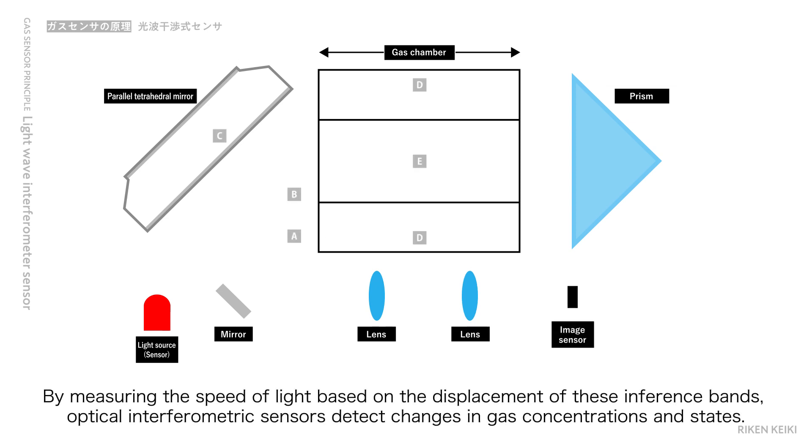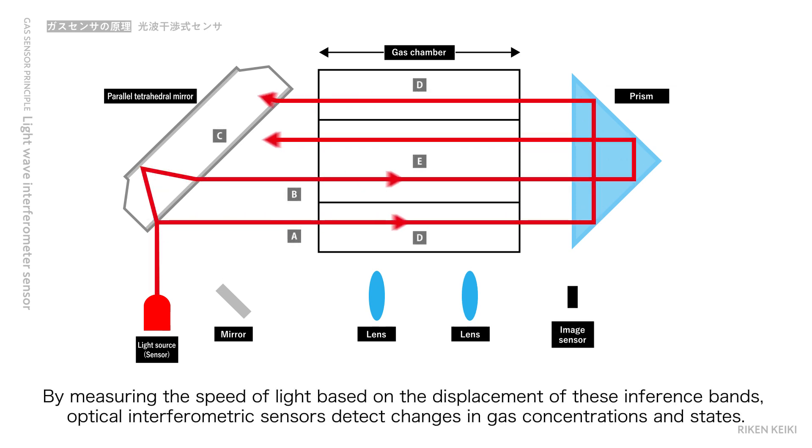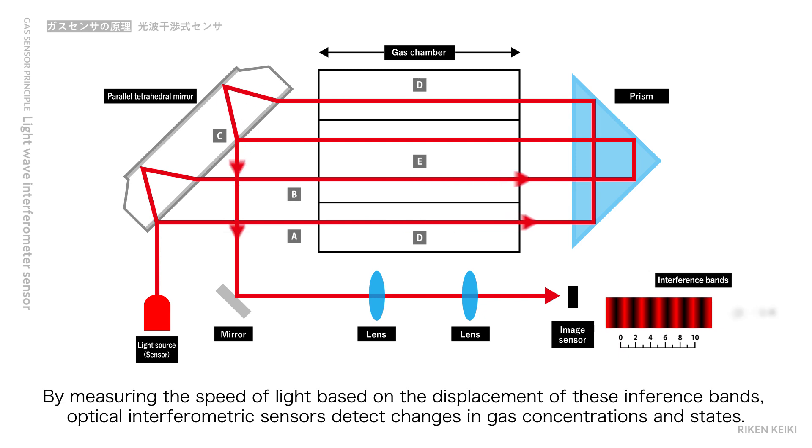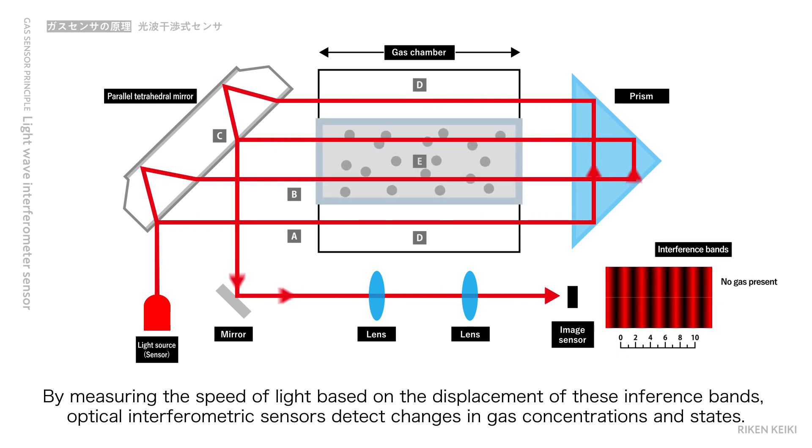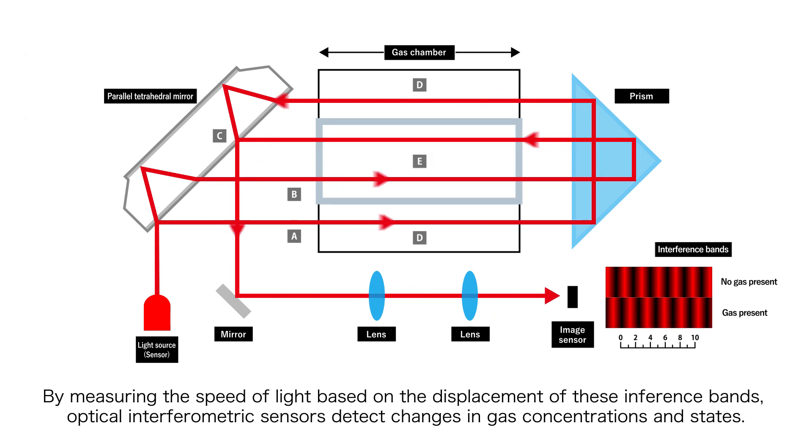By measuring the speed of light based on the displacement of these interference bands, optical interferometric sensors detect changes in gas concentrations and states.